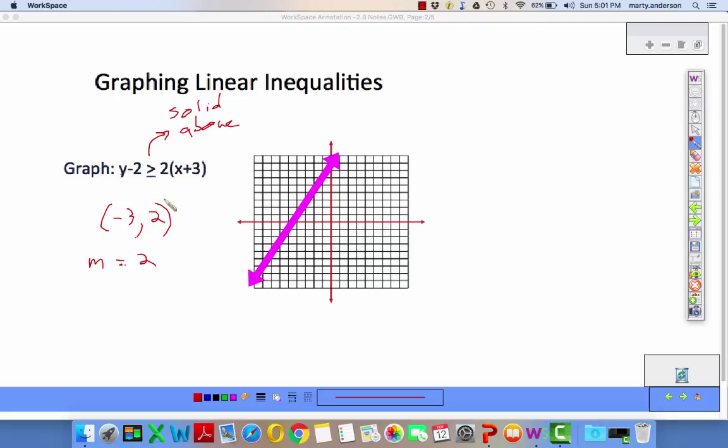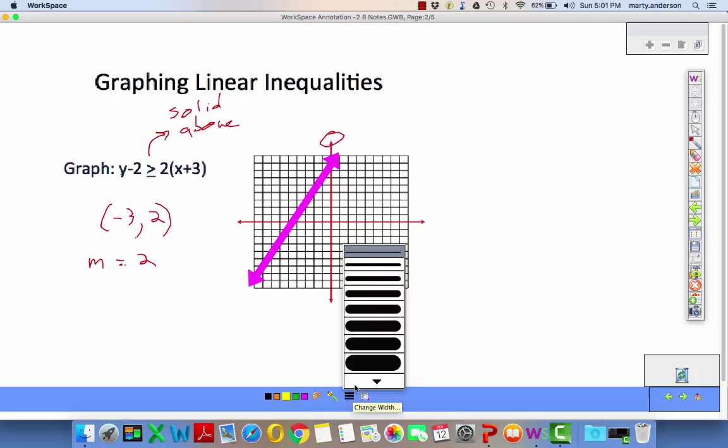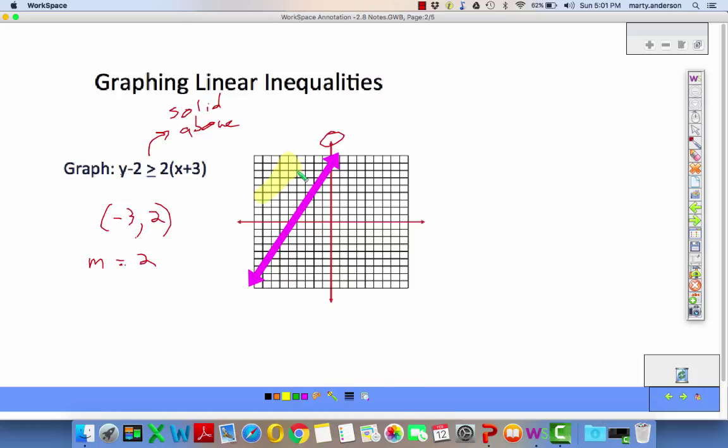That's a little thicker than we probably need, but it gets the job done. And then it says shade above. Where do the y's get bigger? The y's are going to get bigger up here, so we're going to be above it, the upper left portion. Maybe we should grab a highlighter. Now we're cooking with gas. Look at that. I'm getting better at this. Things are going well, I'm getting good grades, my future's so bright.